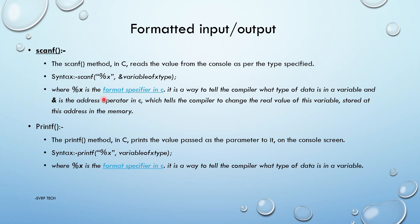Format specifiers include %d, %c, %s, %f, etc. The ampersand (&) is the address operator in C, which tells the compiler to change the real value of the variable stored at its address in memory. That means, if we have variable A, the value we read will be stored at the address of A.